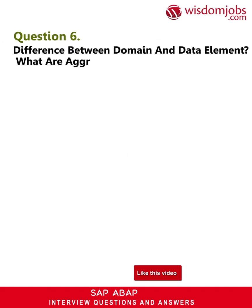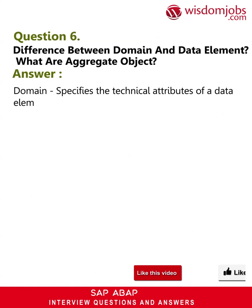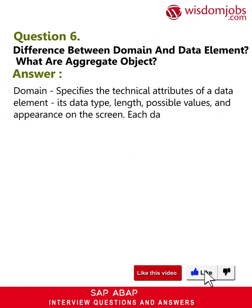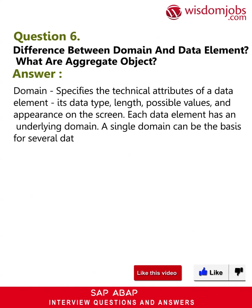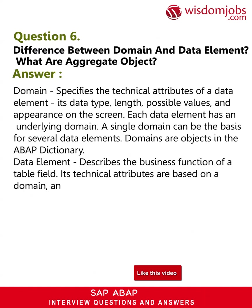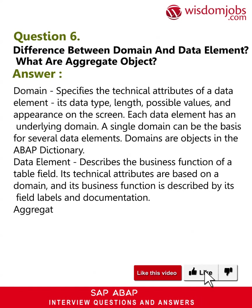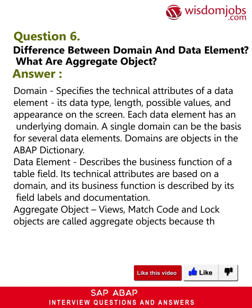Question 6: What is the difference between domain and data element? What are aggregate objects? Answer: A domain specifies the technical attributes of a data element — its data type, length, possible values, and appearance on the screen. Each data element has an underlying domain, and a single domain can be the basis for several data elements. A data element describes the business function of a table field; its technical attributes are based on a domain, and its business function is described by field labels and documentation. Aggregate objects — views, match codes, and lock objects — are called aggregate objects because they are formed from several related tables.